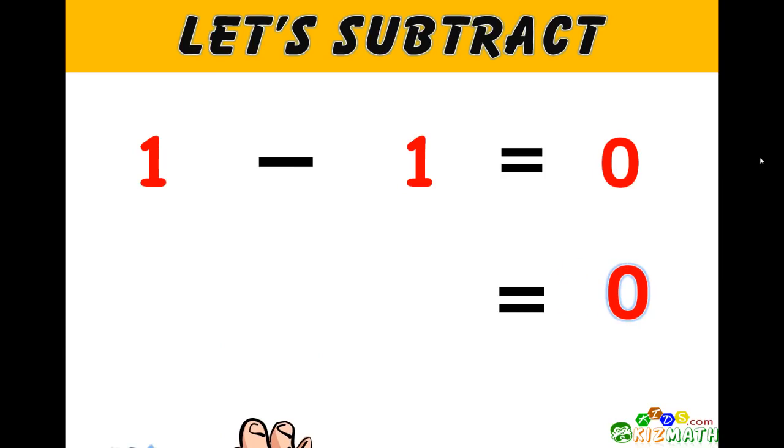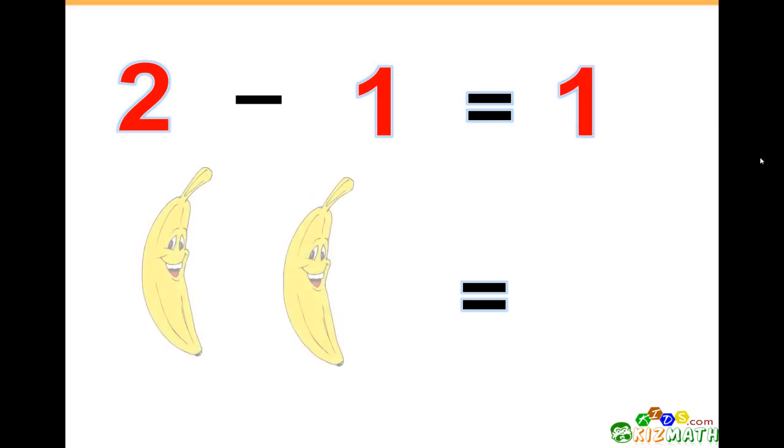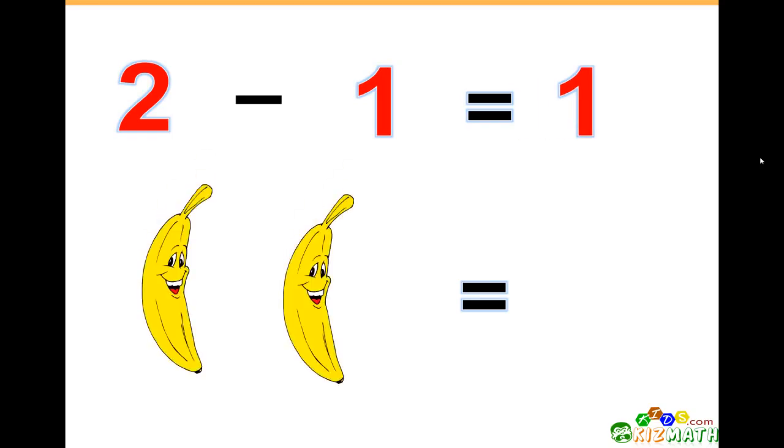2 minus 1 equals 1. If we have two bananas and we take away one banana, we have only one banana left.